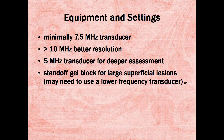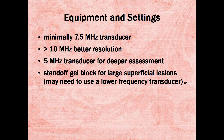Equipment and settings. Minimally, you need a 7.5 MHz transducer. Having a transducer of greater than 10 MHz will give you better resolution, but sometimes you need to use a 5 MHz transducer for assessment of deeper lymph nodes. A standoff gel block can be used for large, superficial lesions, but you may need to use a lower frequency transducer.